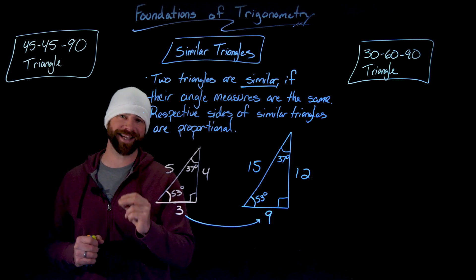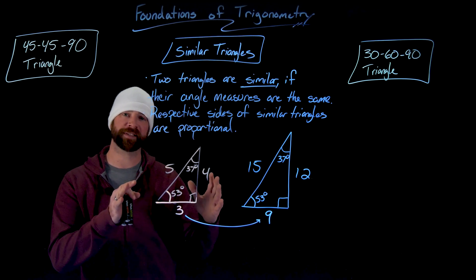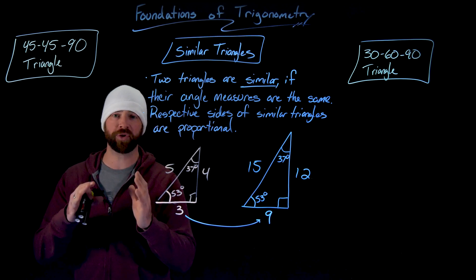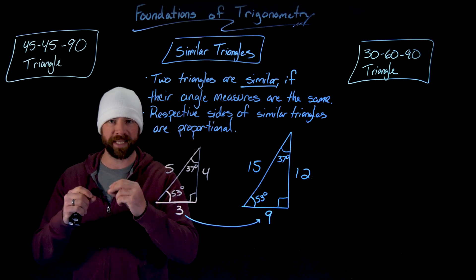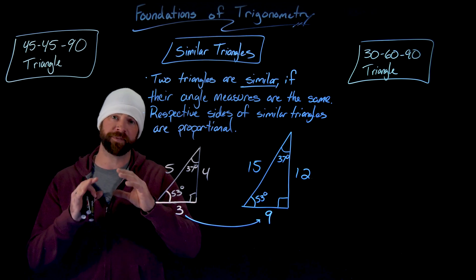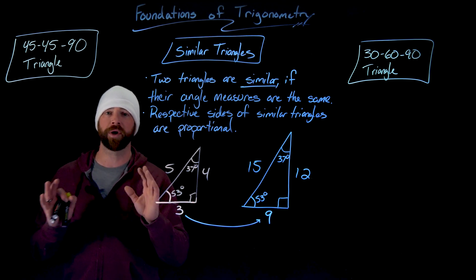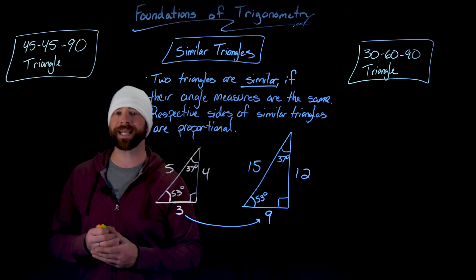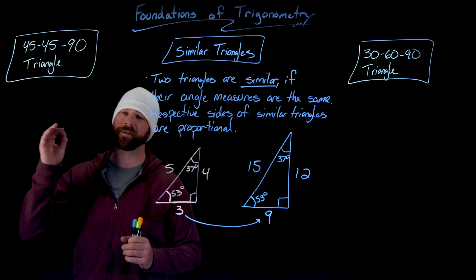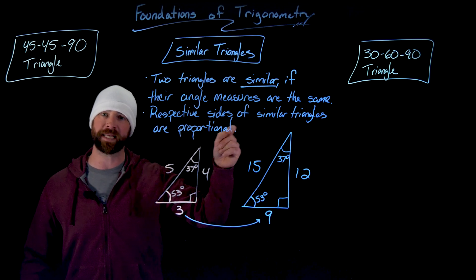Since we have this idea of similar triangles, if we can get some unit triangles to base things on, trigonometry will allow us to do some powerful measurements later on. We have two special triangles that are very important: the 45-45-90 and the 30-60-90.